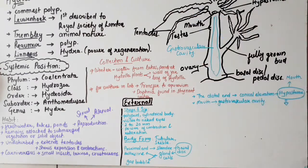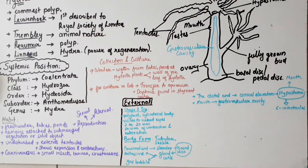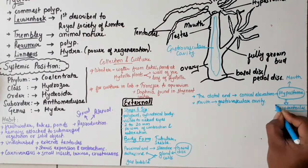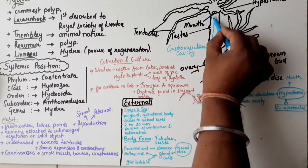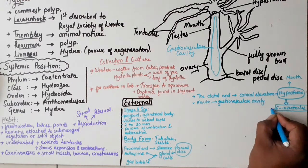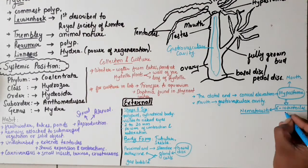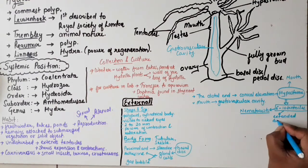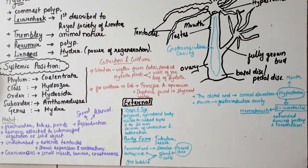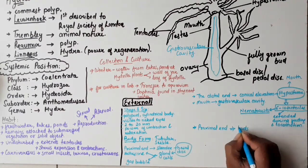Around the hypostome, we see 6 to 10 tentacles. These tentacles are connected to the gastrovascular cavity by hollow processes and contain nematocysts. When tentacles are extended, Hydra is either feeding or moving.